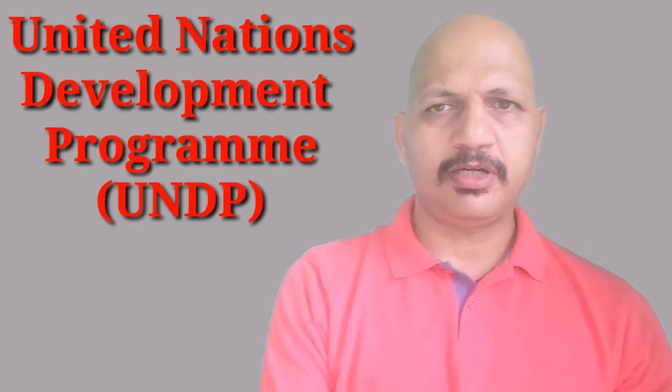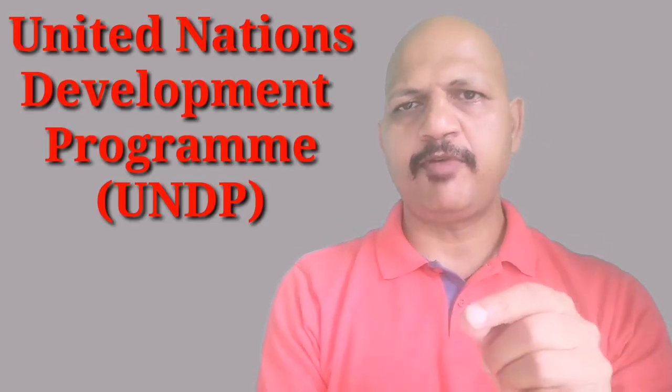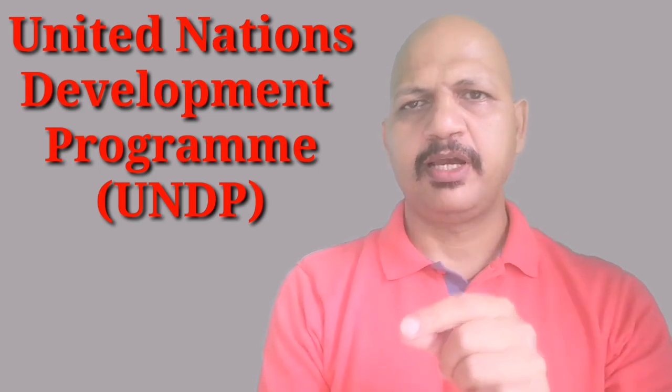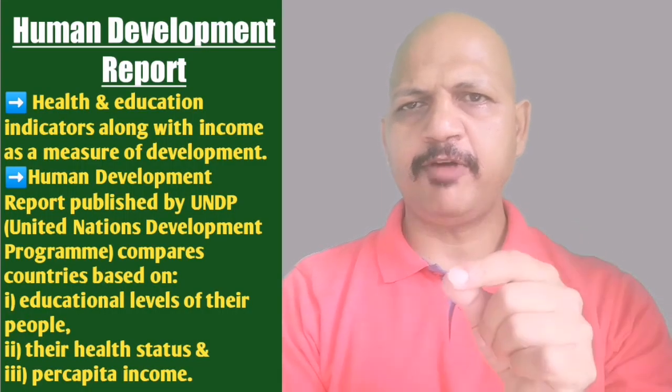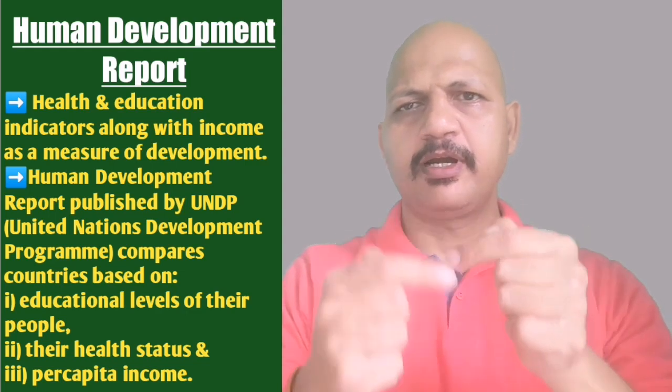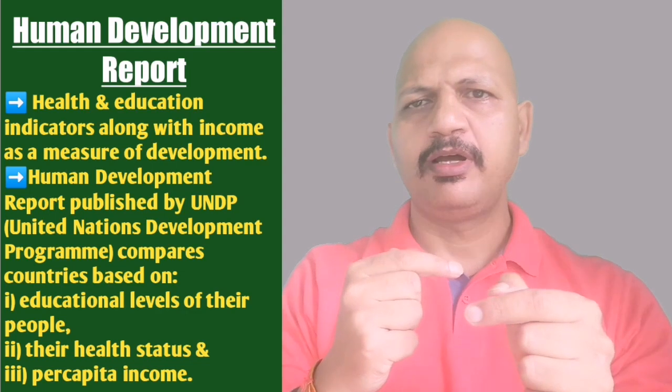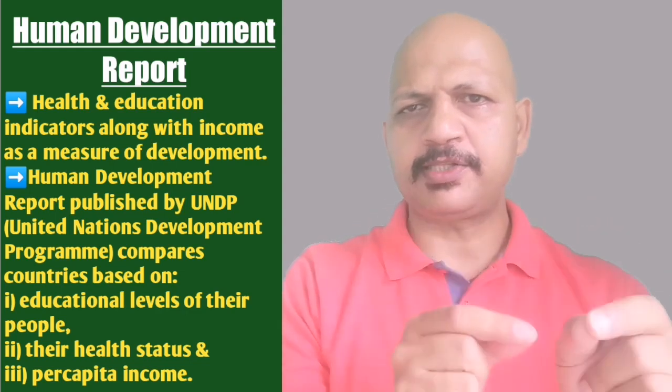So now we realize that per capita income is an important aspect of development but it is inadequate. We need to consider some other criterion which are essential to live well. In this respect we have come across two very important aspects: the educational level of the people as well as the health status. These two should be considered apart from the per capita income when we compare countries. This is what the United Nations Development Program does. It publishes a report known as Human Development Report.